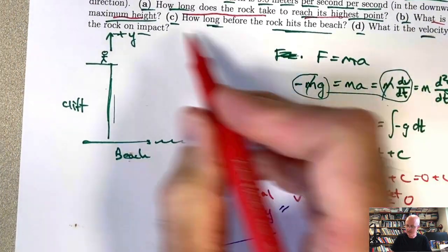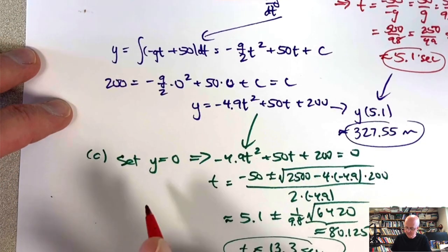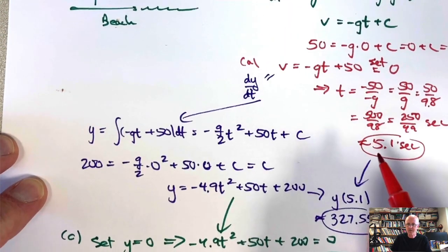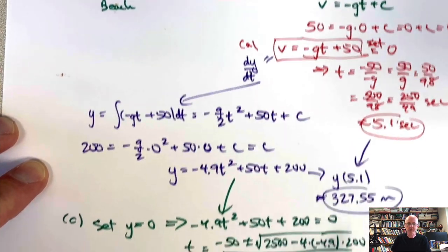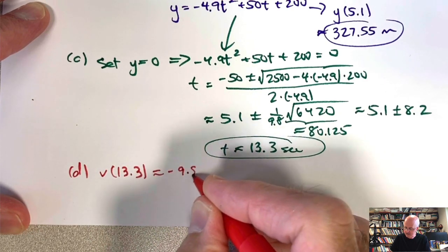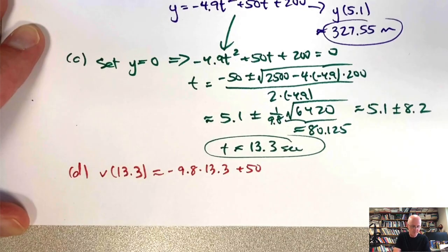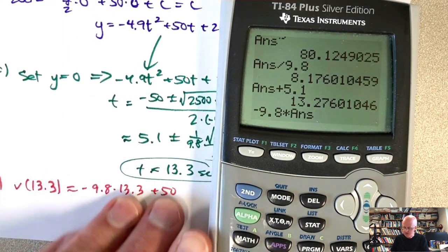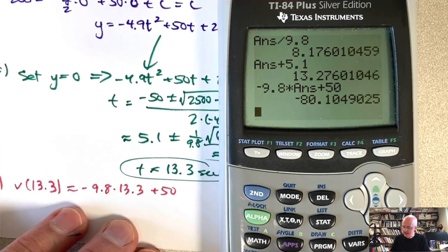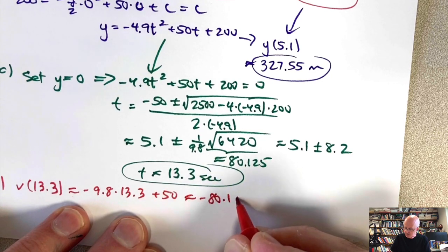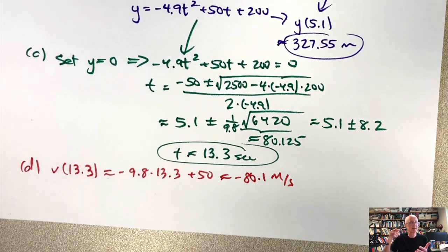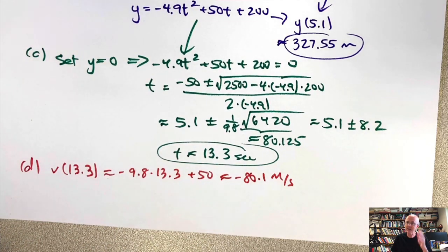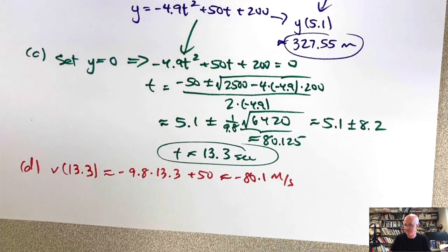For part D, the velocity on impact: it's going downward so it's a negative velocity. Using v = -9.8t + 50 at t ≈ 13.3 seconds: v ≈ -9.8(13.3) + 50 ≈ -80.1 meters per second. The speed is 80.1 m/s — getting hit with a rock going that fast could be lethal.